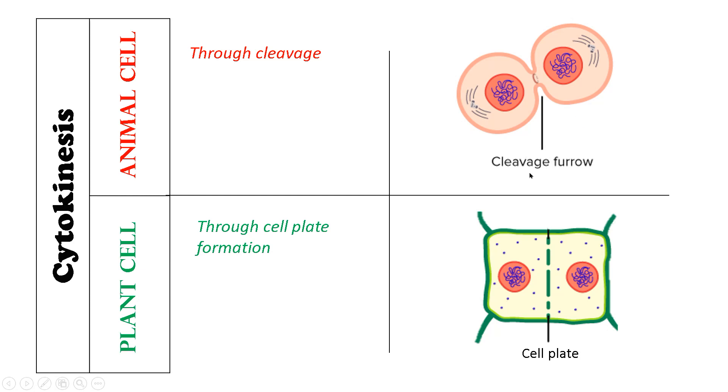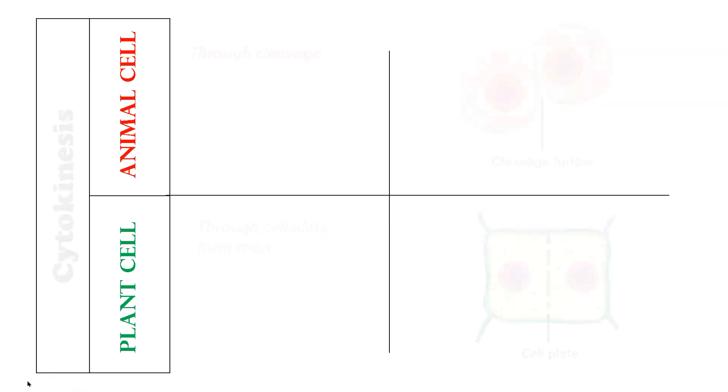And in case of plant cells, division starts from center towards periphery with the help of formation of a cell plate.